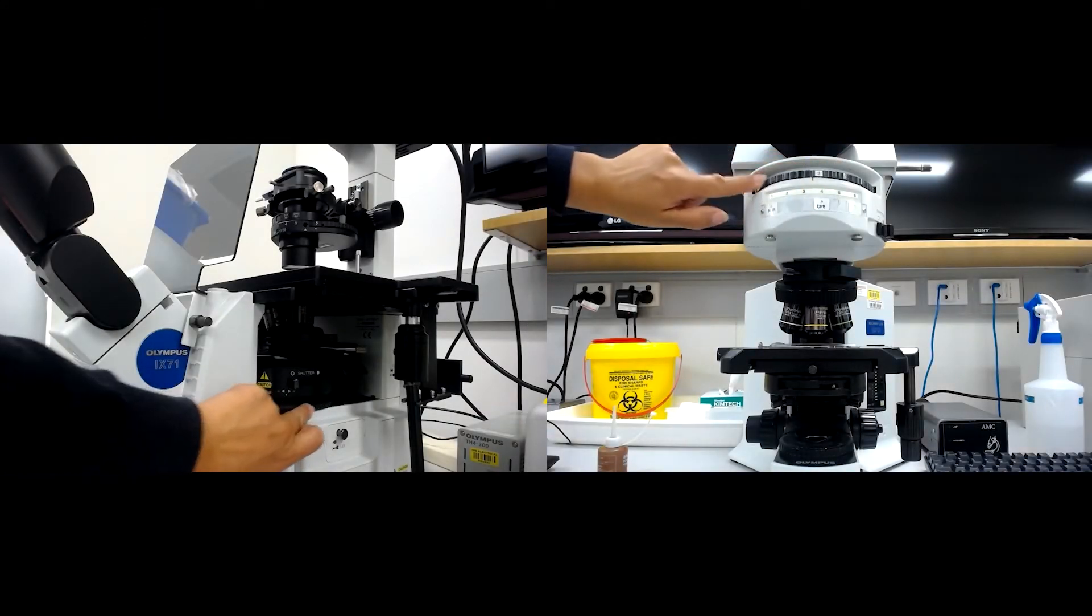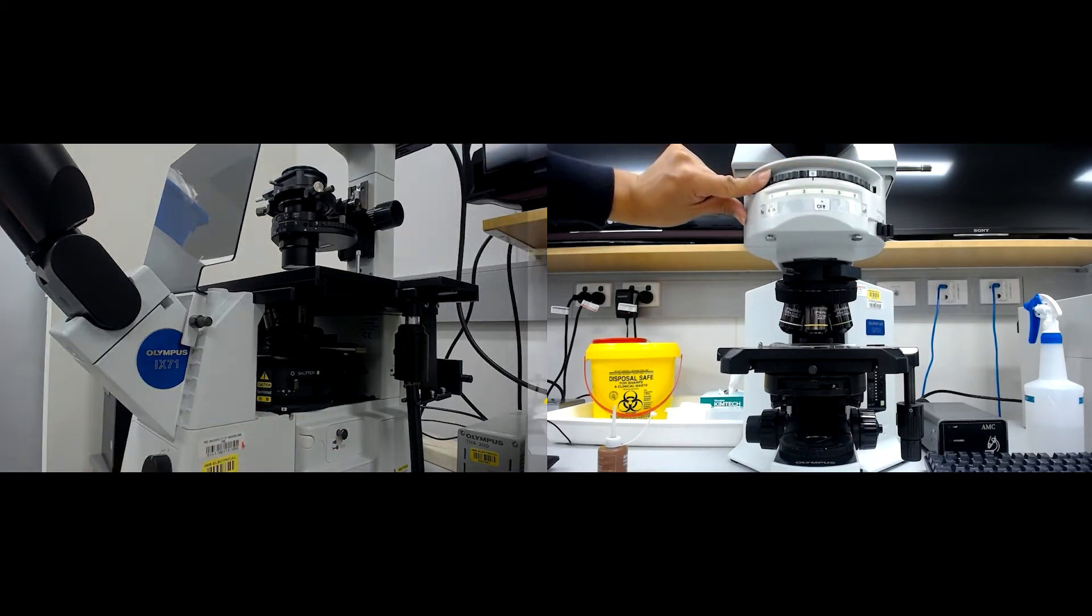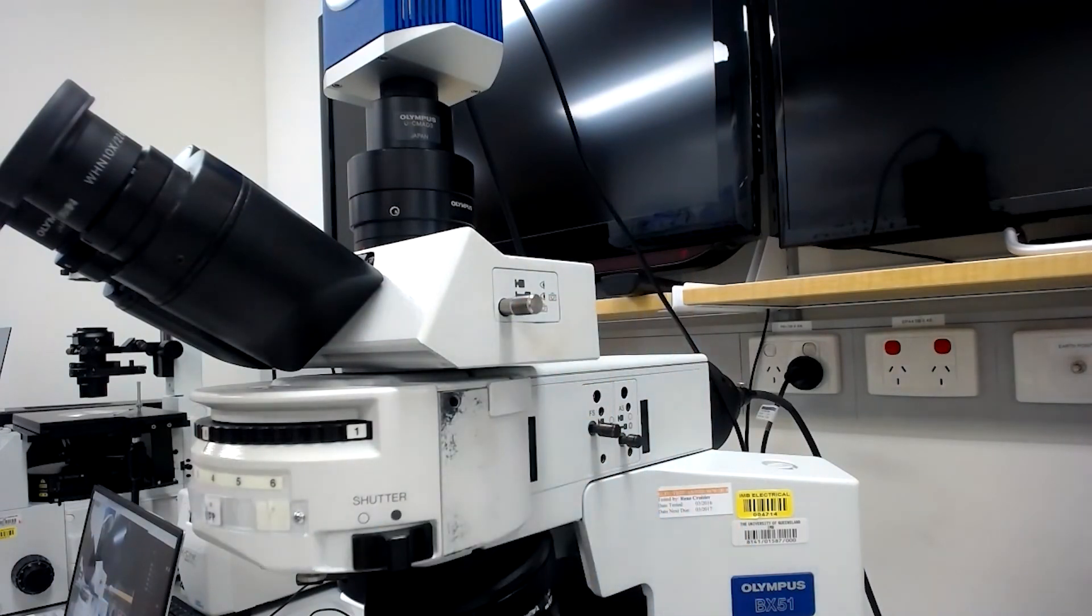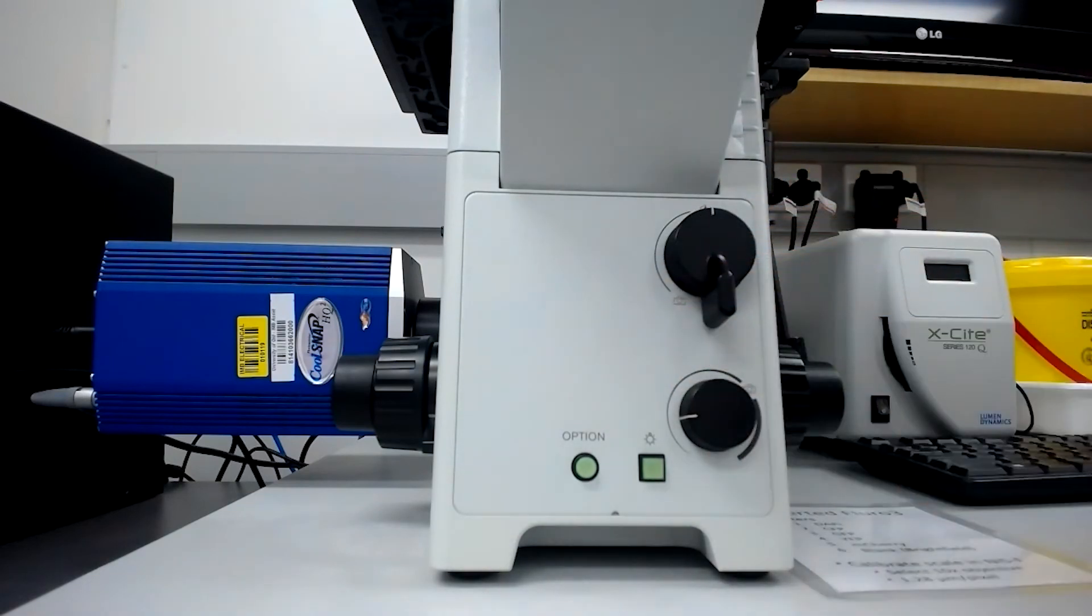Change the emission turret to an empty filter position for brightfield imaging. Make sure the light is directed to the eyepiece by moving the slider on the upright or turning the knob on the inverted.